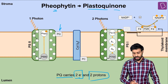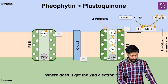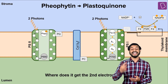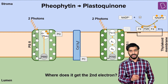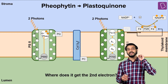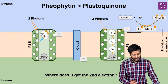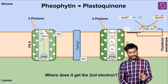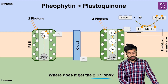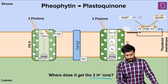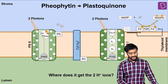We require one more electron. Using the same concept, a second P680 will take part — it will be excited, release an electron, which passes to pheophytin. So we have two pheophytins carrying two electrons. Plastoquinone gets the two electrons. But it also requires two protons, and there are plenty of H⁺ ions in the stroma, so PQ takes up the two H⁺ ions from the stroma.